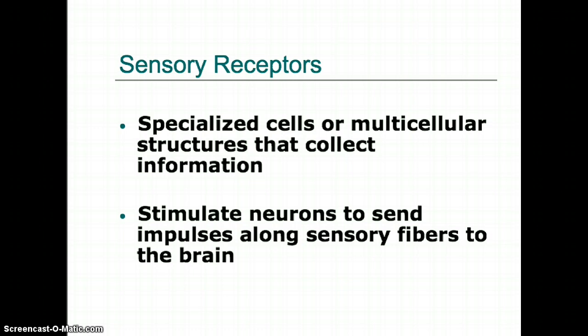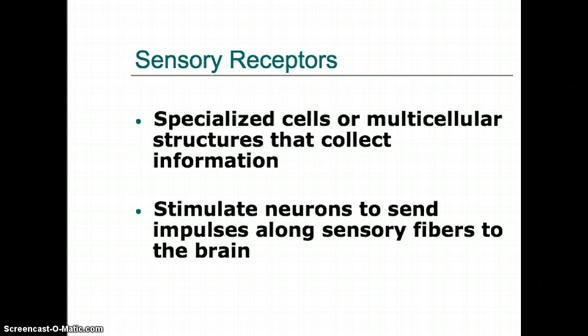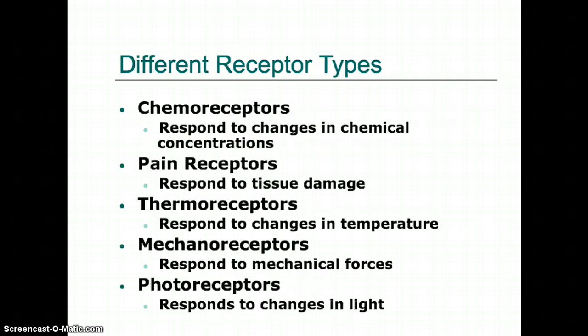Receptors stimulate the neuron to send the impulse to the brain. The sensory signal travels to the brain and spinal cord, while motor signals go away from the brain and spinal cord. These are the five different types of receptors we're going to look at for sensory receptors — things typically found at the surface of the skin.